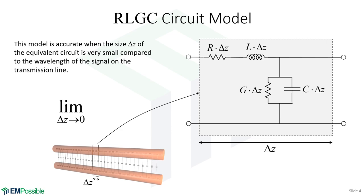Thinking of these as discrete elements, we look at a little tiny section of the transmission line. This distance delta Z has to be much, much smaller than a wavelength in order for the circuit analysis to be valid — imagine it being one-millionth the size of a wavelength. That means we can apply standard circuit theory where the voltage across the line is constant. If the wavelength were more on the scale of the circuit, the voltage would actually vary and we really could not apply conventional circuit theory. In a rigorous treatment, we perform circuit theory and then let delta Z go to zero.